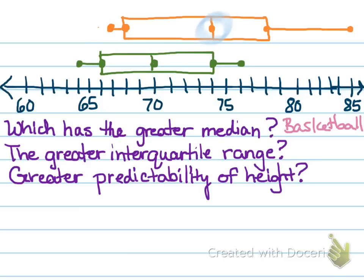Which one has the greater interquartile range? Again, we're going to have basketball. The interquartile range is longer. It stretches across the number line more. So it's basketball.